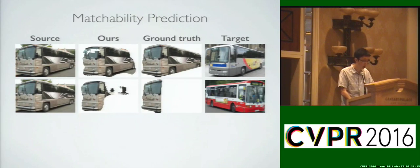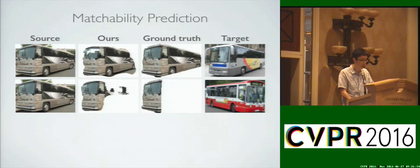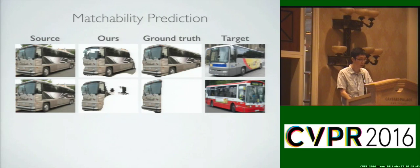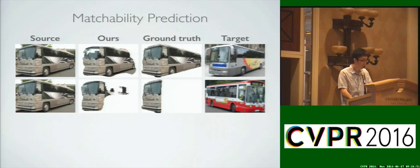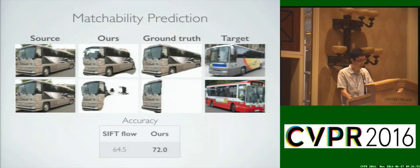Our next experiment evaluates the performance of matchability prediction. One can see that even though our network has not seen a single segmentation label in the real image domain during training, it is able to infer a rough segmentation of the object when the target is in a similar pose, and does accurate occlusion reasoning when given a less aligned target. Overall, our network is 8% better than the C-Flow baseline that thresholds the matchability based on the feature function.